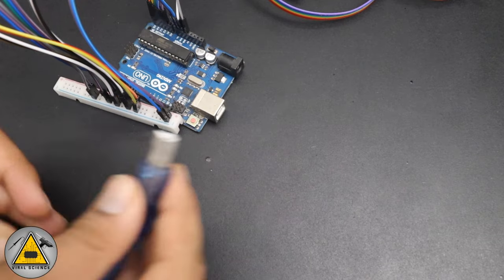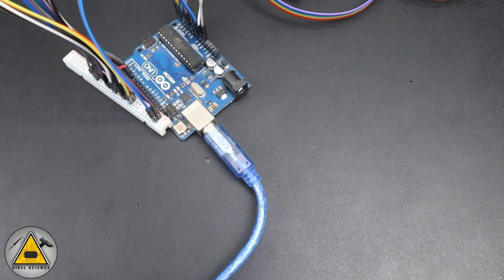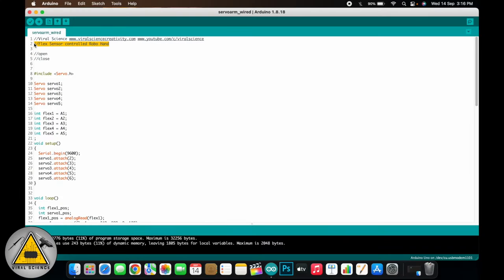After completing the connection, it's time for the programming. So we'll connect the Arduino board with the computer. So here is the code of our project. And first we'll upload this code as it is. And after uploading, we'll read the inputs from the flex sensor and we'll note it down. So to do this, select the board that is Arduino Uno, select the port on which it is connected, and upload the code.